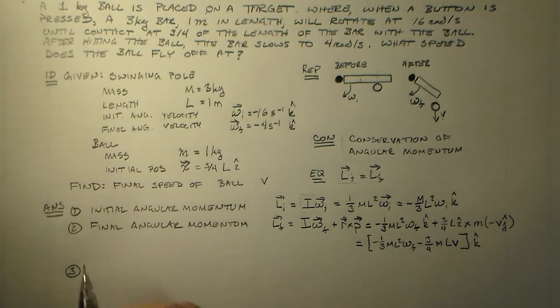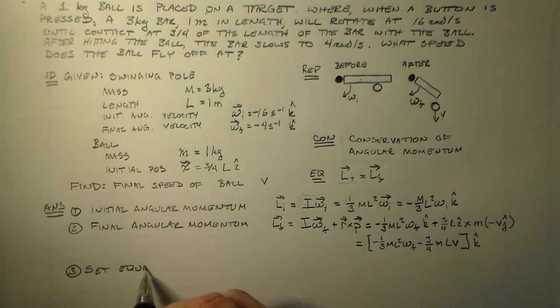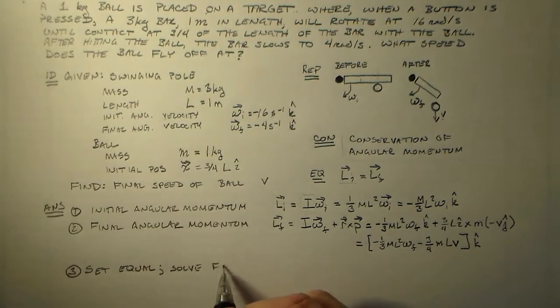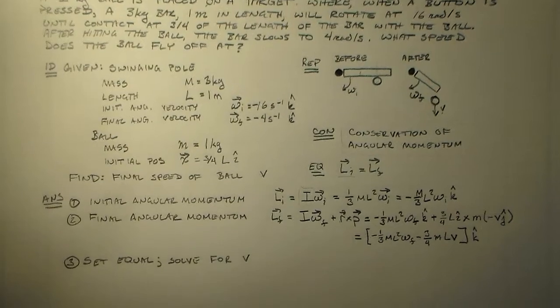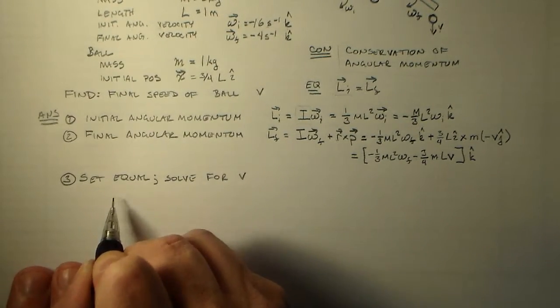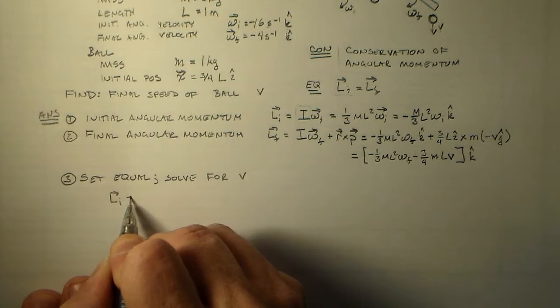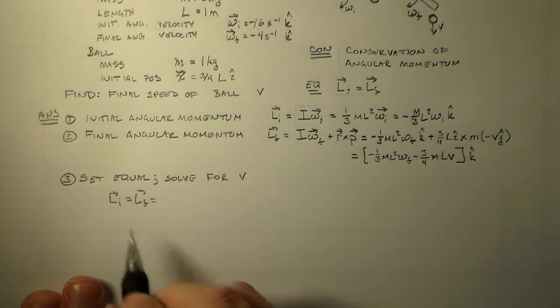So I have minus one-third m l squared omega f. And that guy's in the k direction. Plus, this three-quarters l in the i-hat direction cross p, which is m times v, which is little m times minus v in the j-hat direction. It's minus j-hat is the direction and v is the magnitude. Okay? And so, our final angular momentum is minus one-third m l squared omega f. Yeah. I'm going to have good things happen, so let's just anticipate the good things.